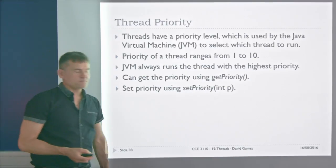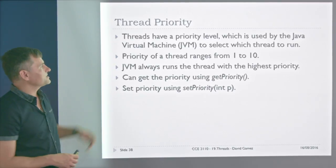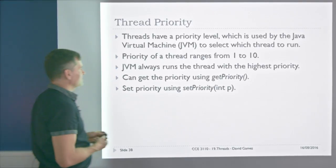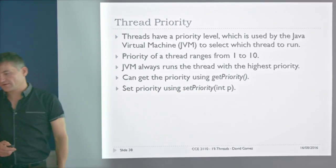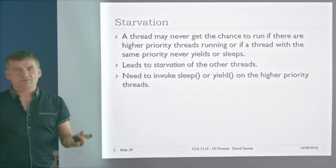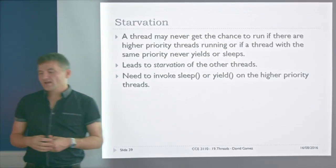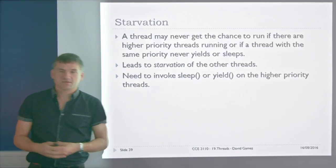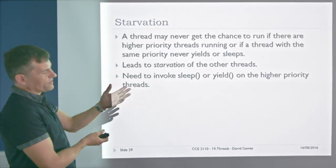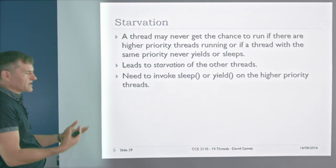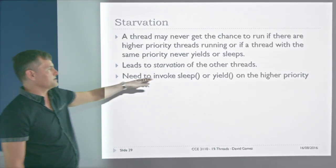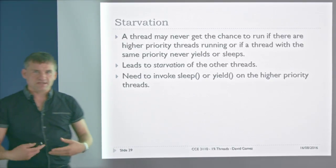Threads have a priority level ranging from 1 to 10, used by the JVM to select which thread to run. It always runs the highest-priority thread. You can get and set priority using getPriority() and setPriority(). Priority has a problem called starvation: if there are many high-priority threads and one low-priority thread, the low-priority thread may never execute. In that case, you need to invoke sleep() or yield() on the higher-priority threads to give the lower-priority thread some CPU time.